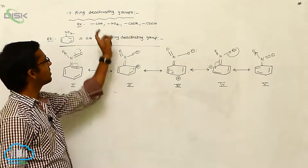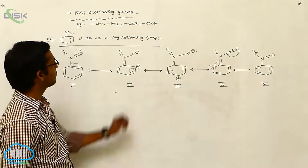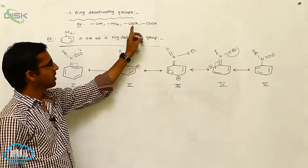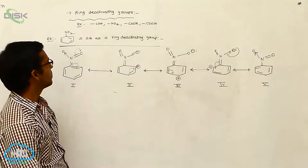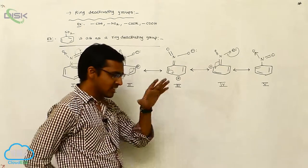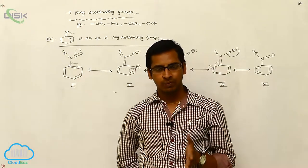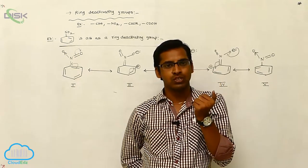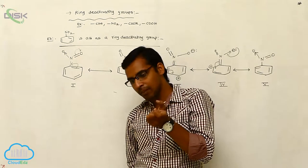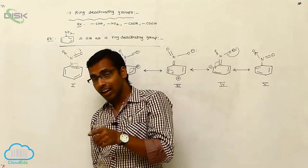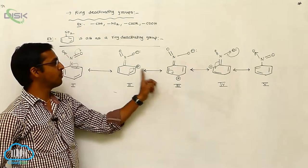Such groups are called ring deactivating groups. Examples are aldehyde, nitro, ester, acid, or ketone. Ring is deactivated — meaning electron density increases at meta position but electron density decreases at ortho and para positions due to the presence of positive charge.